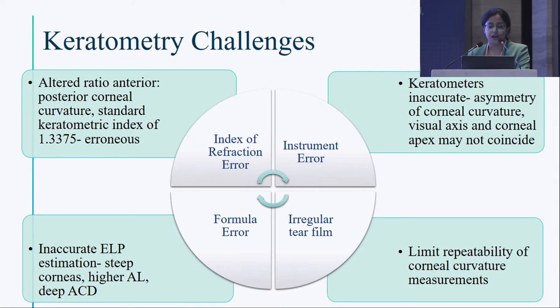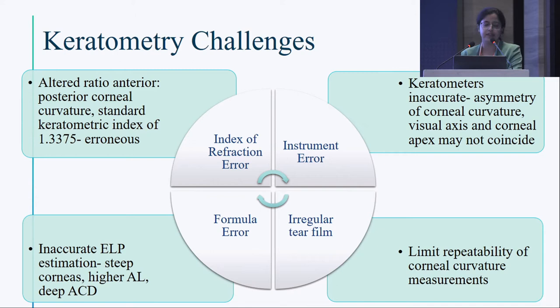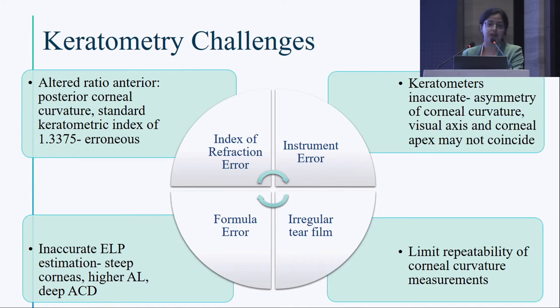Keratometry challenges include index of refraction error, instrument error, formula error, and irregularity of tear film. Conventional keratometers assume a fixed anterior-to-posterior corneal curvature ratio using the standard keratometric index of 1.3375, which does not hold true in keratoconus. The anterior-to-posterior corneal curvature ratio is altered. Keratometers are also inaccurate because asymmetry of corneal curvature is not accounted for, and visual axis and corneal apex may not coincide. Formula errors arise because newer regression formulas are based on effective lens position estimation, which is inaccurate due to deeper anterior chamber depth, higher axial length, and steep corneas. Irregular tear film also limits repeatability of corneal curvature measurements.